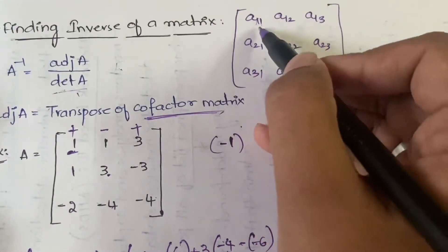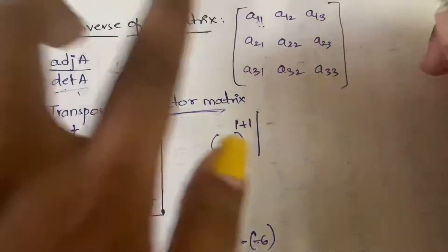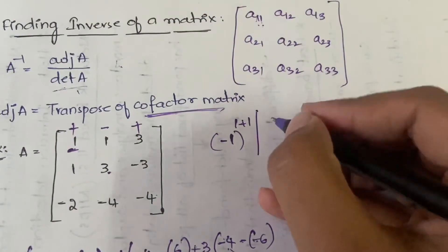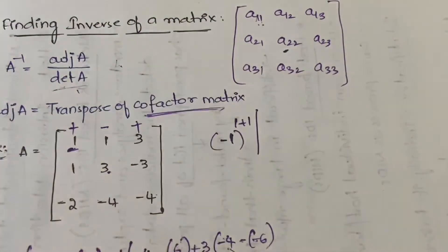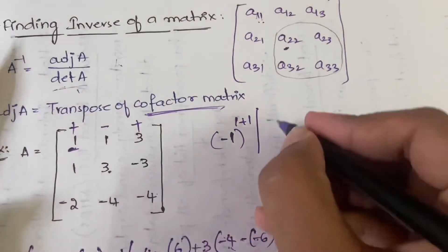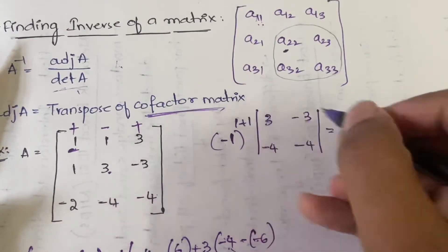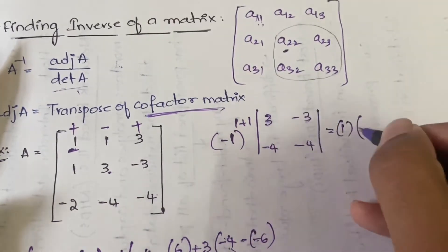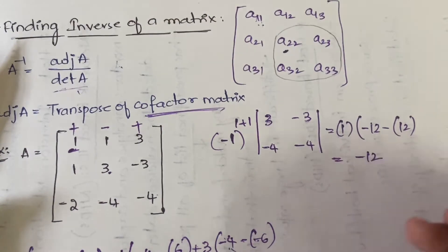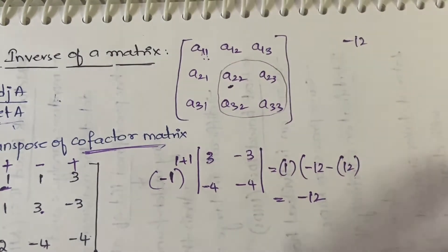For element at position (1,1): i=1, j=1, so minus 1 to the power 1+1. You close row 1 and column 1, leaving the 2×2 submatrix with elements A22, A23, A32, A33, which are 3, −3, −4, −4. The calculation gives (−1)² × (3×(−4) − (−3×(−4))) = 1×(−12−12) = −24. So the first cofactor element is −24.